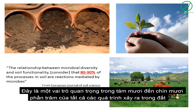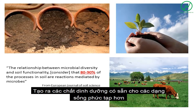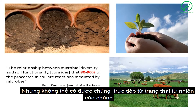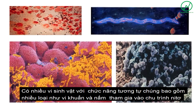Microbes play a role in 80 to 90 percent of all the processes that occur in soil that make nutrients available for other, more complex forms of life, such as plants and animals, who need these nutrients but who can't get them directly from their natural state.